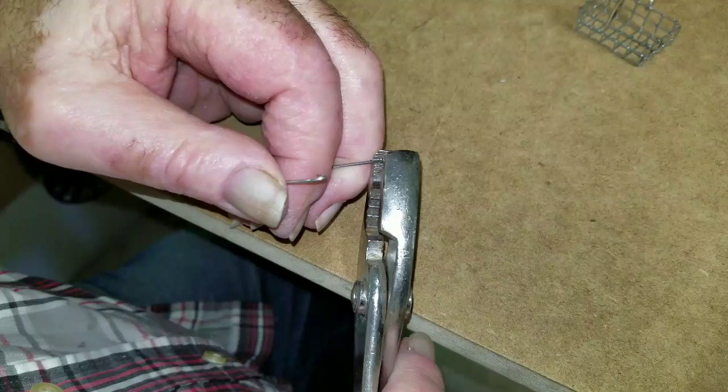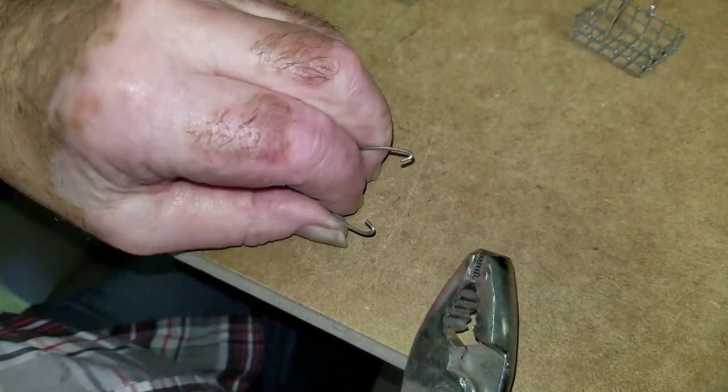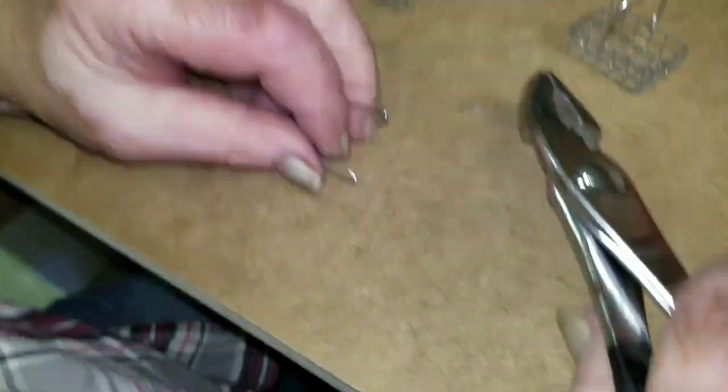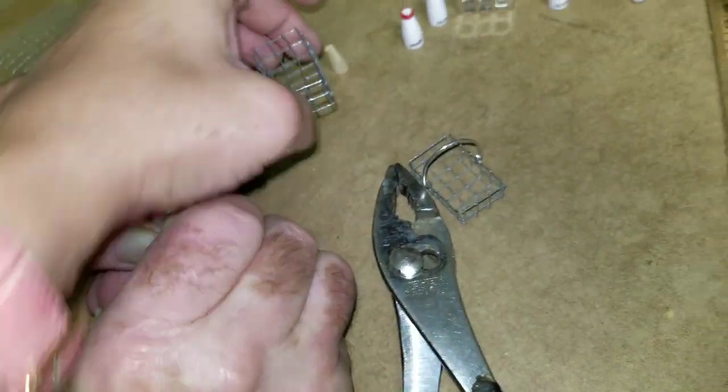You don't want to crimp it all the way until you get it onto the basket. And just get it like that. Then we'll put it on the basket and bend it the rest of the way. But we're going to have to grind that one.